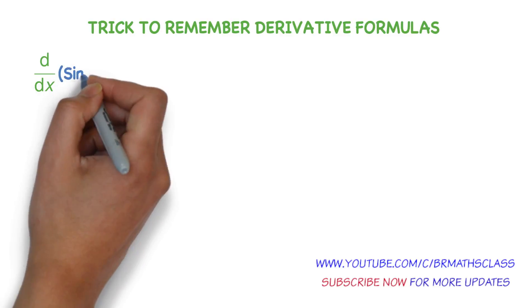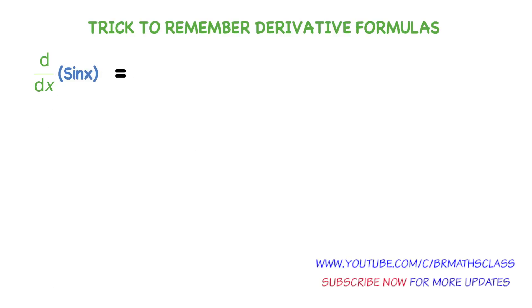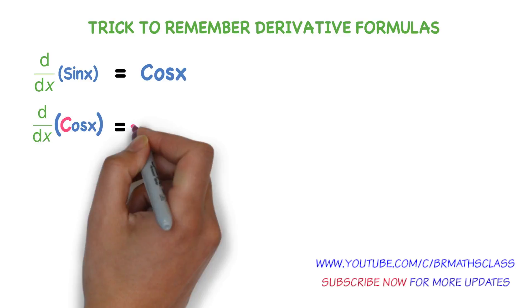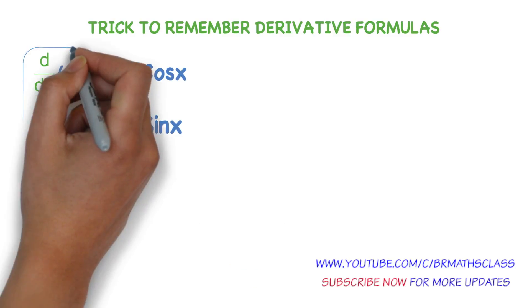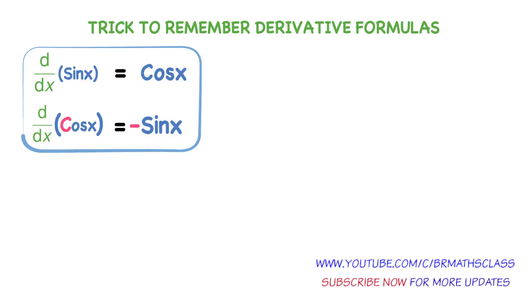Derivative of sin x equal to cos x. Generally most of the students will remember this formula. Derivative of cos x equal to minus sin x. You observe these two formulas. Derivative of sin x is cos x. Derivative of cos x is minus sin x. Some students will confuse in the second formula — derivative of cos x equals minus sin x.